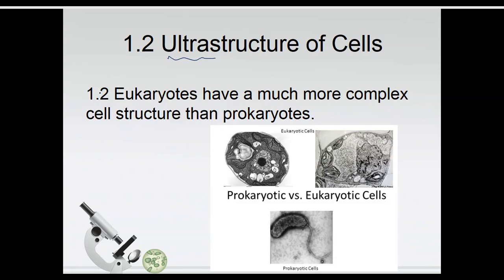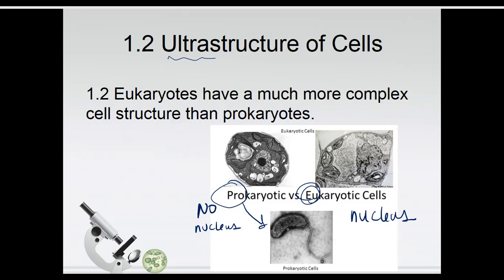We know that eukaryotic cells are more complex than prokaryotic cells. A mnemonic to remember the difference: pro rhymes with no, because prokaryotes have no nucleus. Whereas U rhymes with new, because eukaryotic cells do have a nucleus. So prokaryotic cells have no nucleus, eukaryotic cells do have nuclei, and those eukaryotic structures are far more complex because they have lots of compartments.